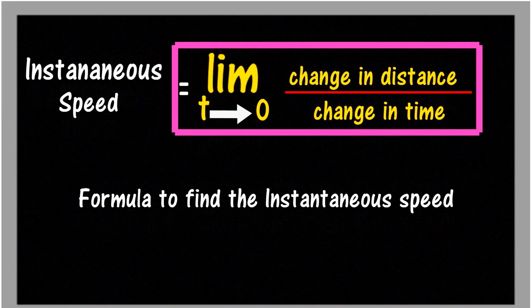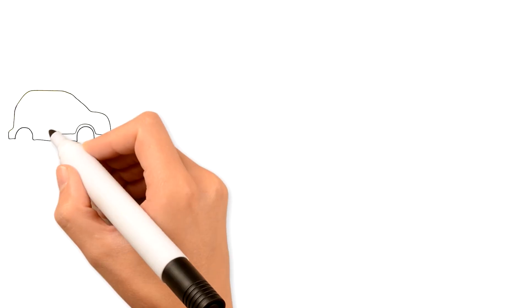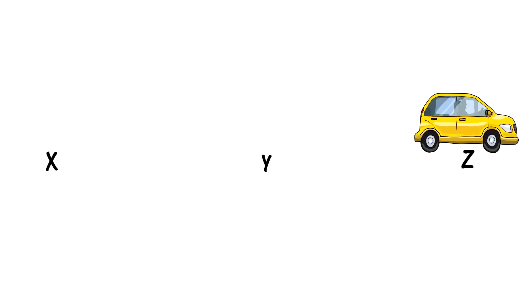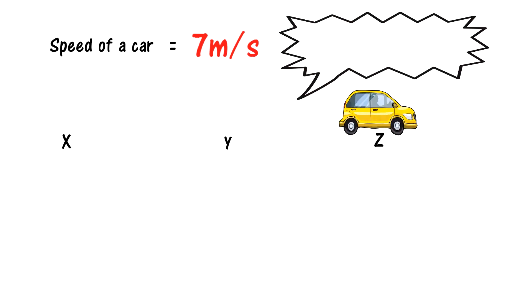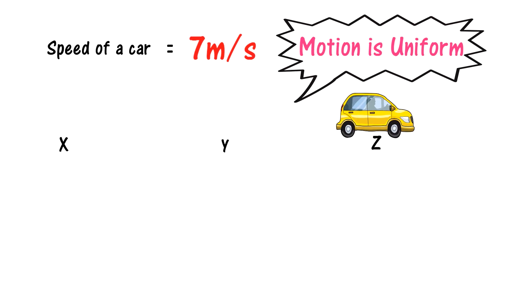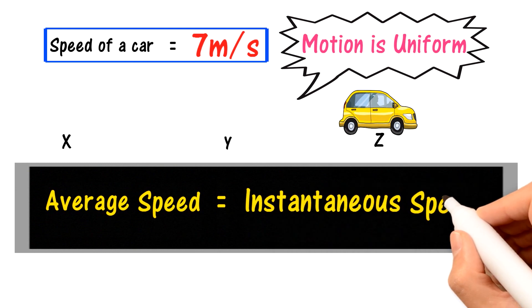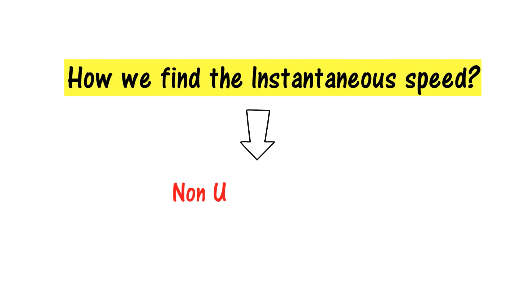This applies to an aeroplane, a car, or any object. Now consider a car moving in uniform motion from point X to Y and from Y to Z, with a speed of 7 meter per second throughout. Since the motion is uniform, the instantaneous speed is 7 meter per second. Keep in mind: when instantaneous speed is not changing, the average speed equals the instantaneous speed. So in uniform motion, average speed gives you the instantaneous speed.